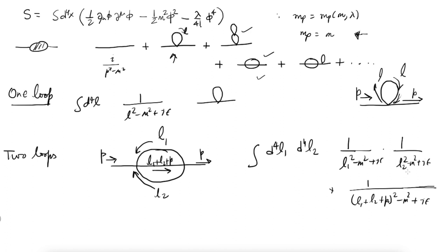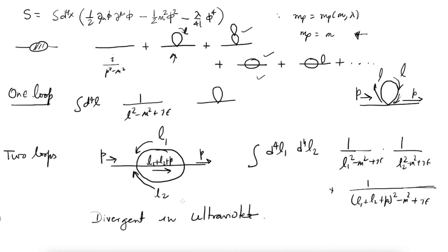This two-loop diagram is also divergent. You have 2 powers from each propagator factor, so 6 powers total in the denominator and 8 powers in the numerator (from d⁴L1 d⁴L2). When L1 and L2 are very large, the external momentum p and mass m are negligible. So 8 powers in the numerator vs. 6 in the denominator — divergent. Going to any loop order, the same situation arises. This is called ultraviolet divergence.